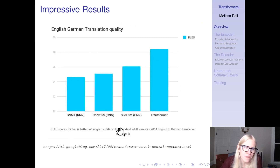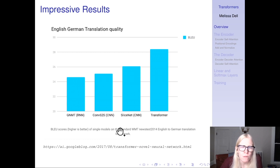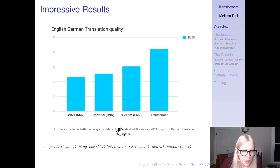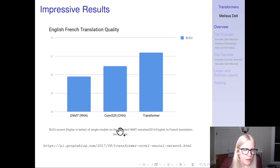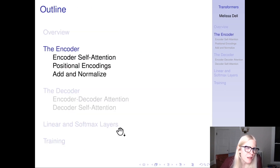The results of the transformer are really impressive. On BLEU — one of the main benchmarks — it's really blowing these other models out of the water. Same on English-French translation quality.